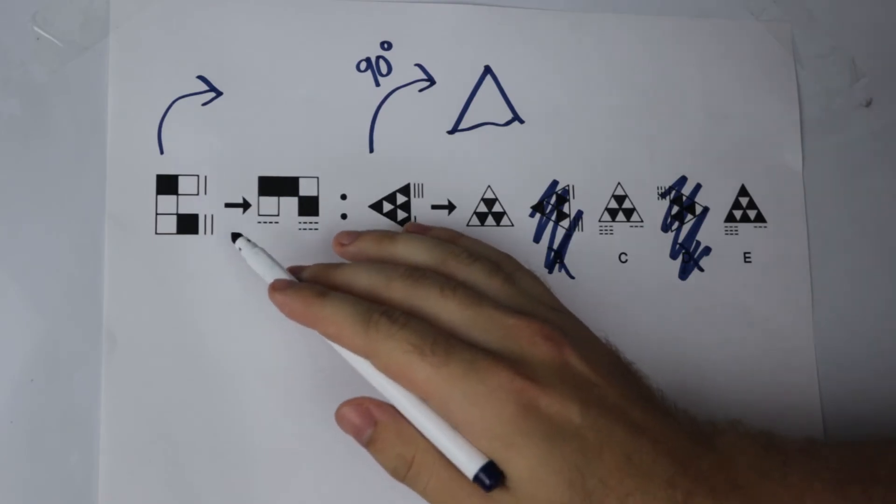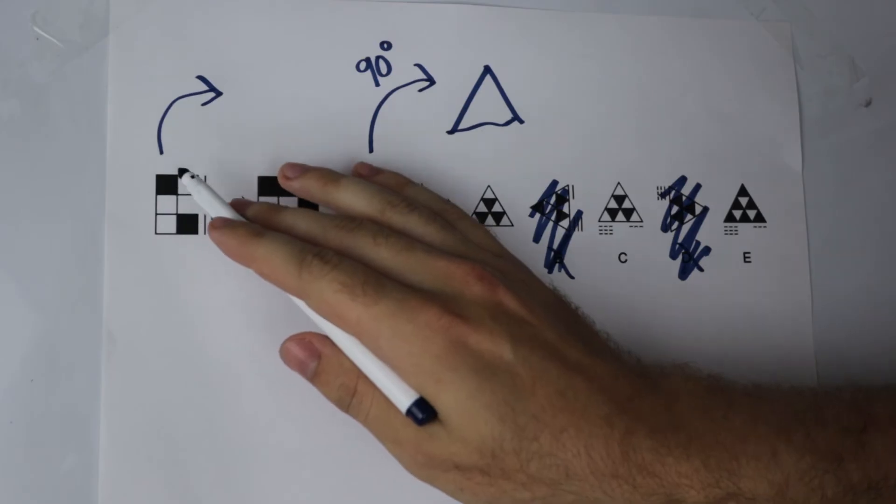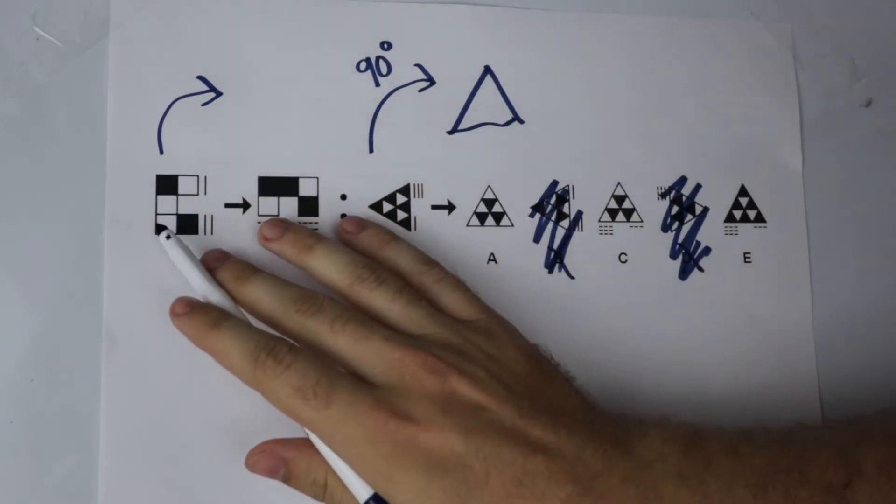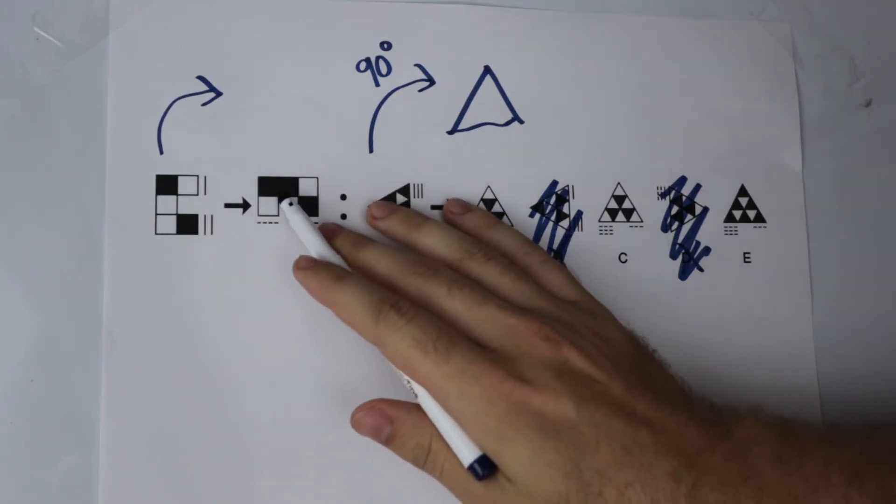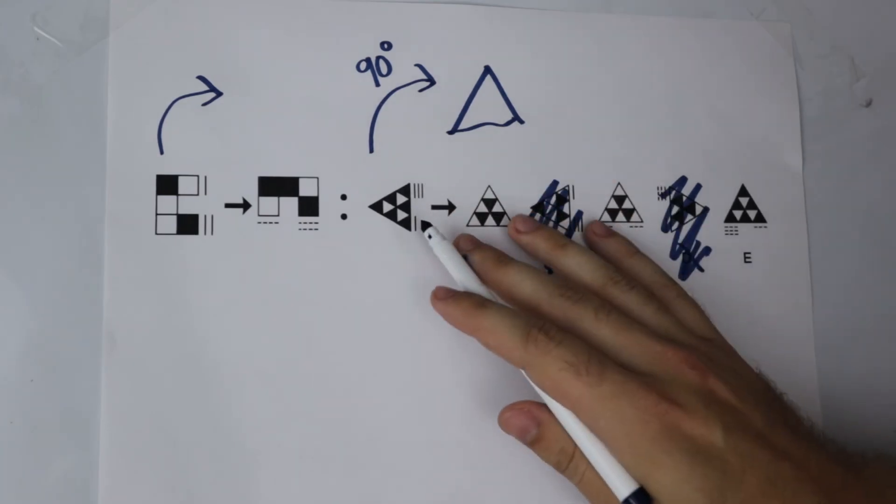Now I notice in fact that as it rotates, the shading of the squares also is inverted. That means it swaps around. So where the square used to be white it is now black, and where it used to be black it is now white. So I need to do the same to my shape.